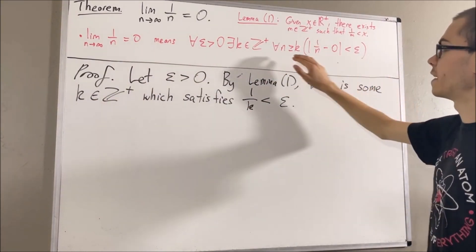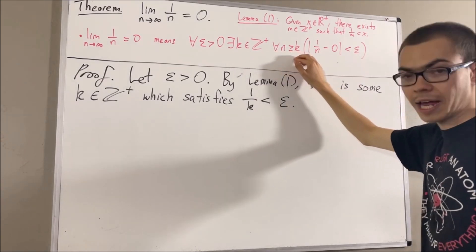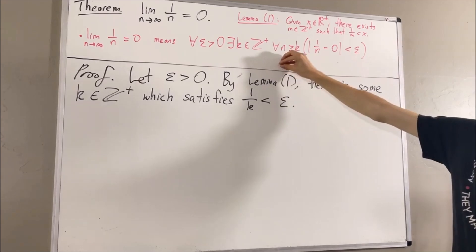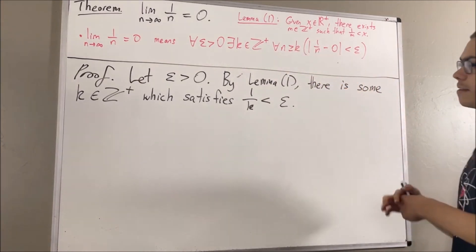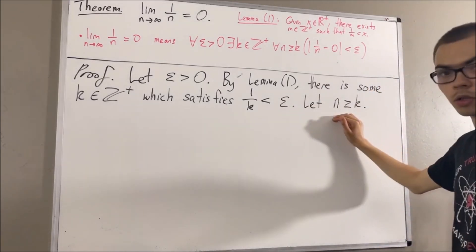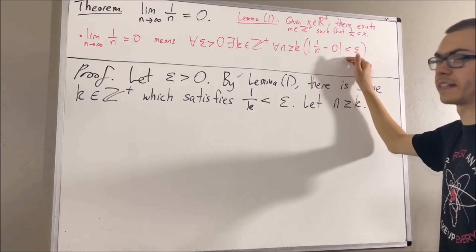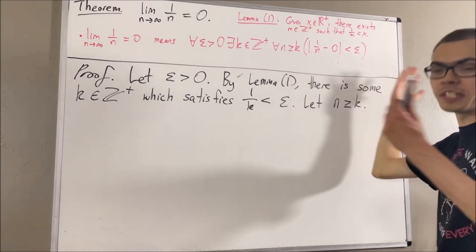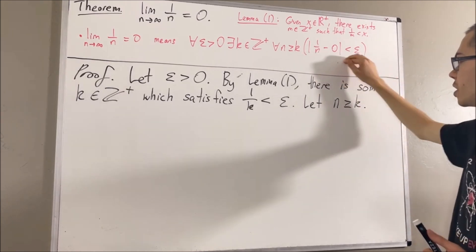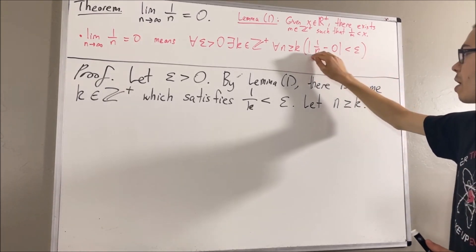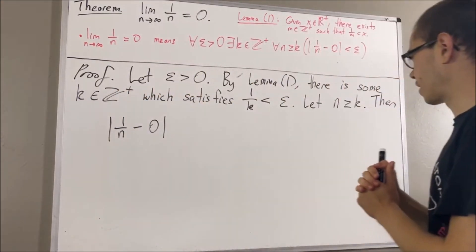Now we're trying to prove a statement about all positive integers greater than or equal to k. So give me an arbitrary positive integer greater than or equal to k — I'll call it n. With n, we want to show that the absolute value of 1 over n minus 0 is less than epsilon. And we're essentially going to be doing exactly what we did in our scratch work. So let's show that this is true, and I'm going to start out by writing the left-hand side.